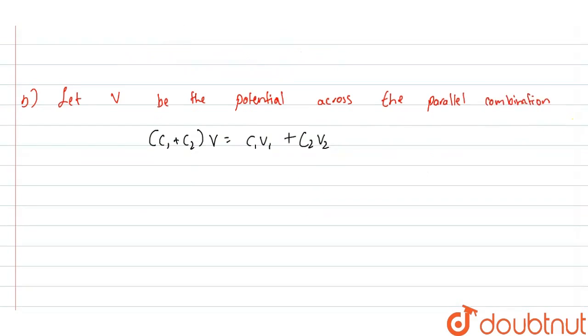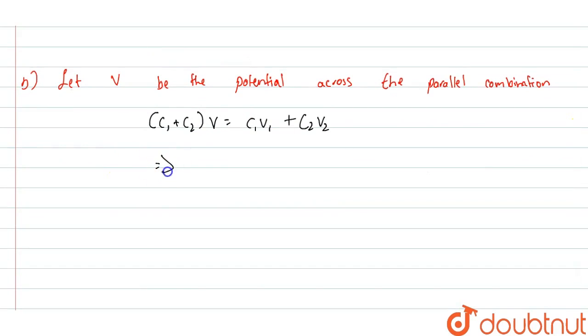Now, rearranging this equation for V, we can find the potential. So V is equal to C1 V1 plus C2 V2 divided by C1 plus C2.